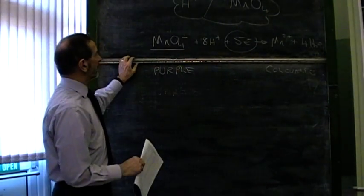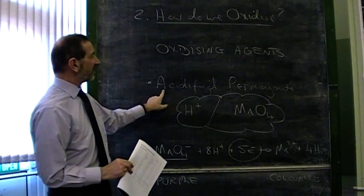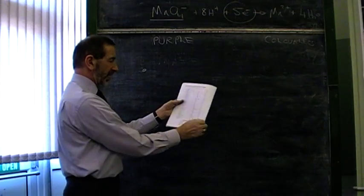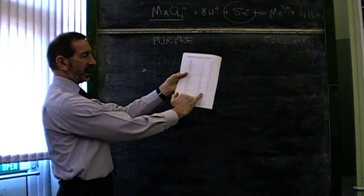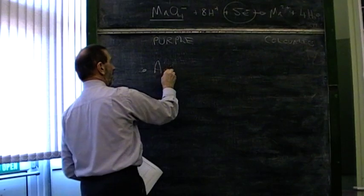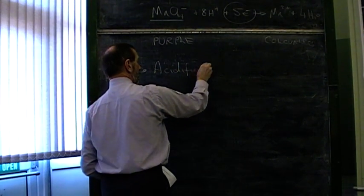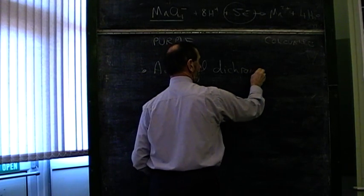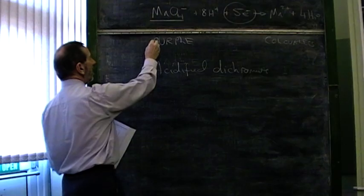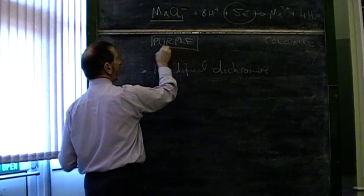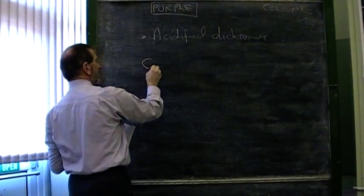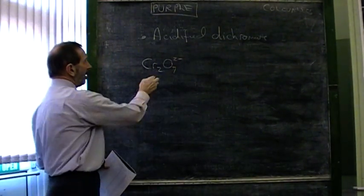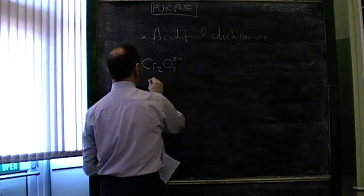A related substance is acidified dichromate. You'll find acidified dichromate also on the bottom of the table on page 11 of the data book. You must get to know these sentences. You must know that the permanganate is purple.